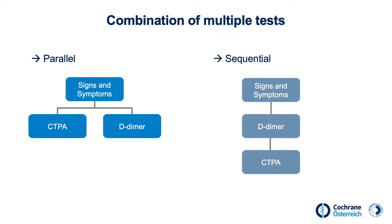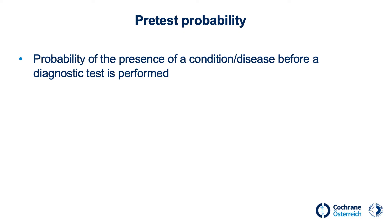Sequentially means that the result of the first test informs the choice of the second test. Before we talk more about tests, we should take a closer look at pre-test probability. Pre-test probability refers to the probability that a disease is present before a diagnostic test is performed. It could be assessed based on history taking, a physical examination, or application of a validated risk score.